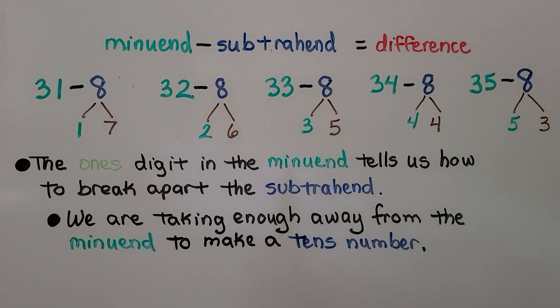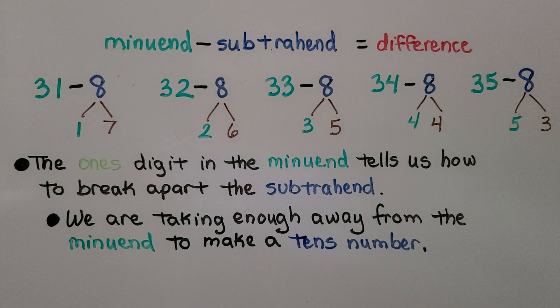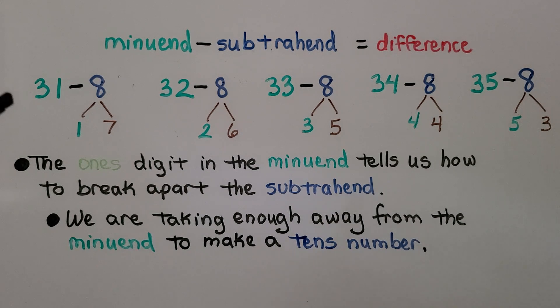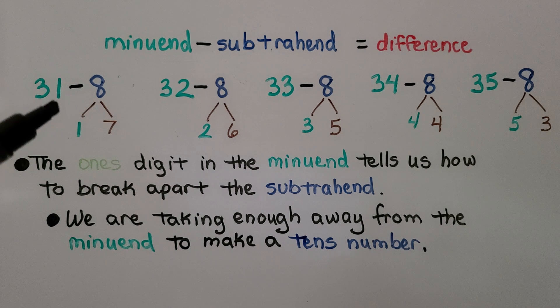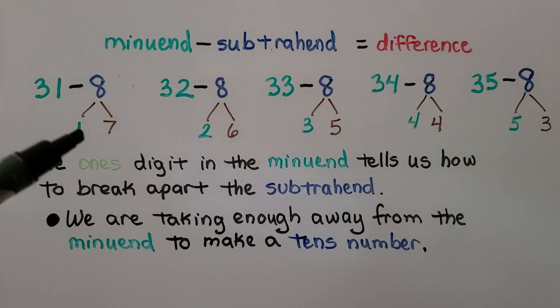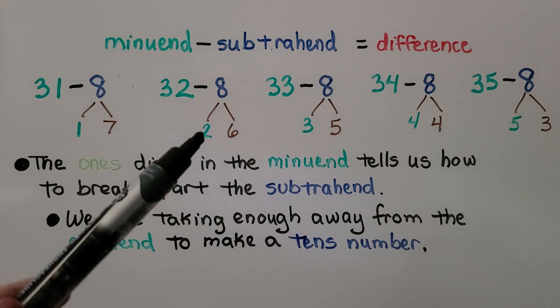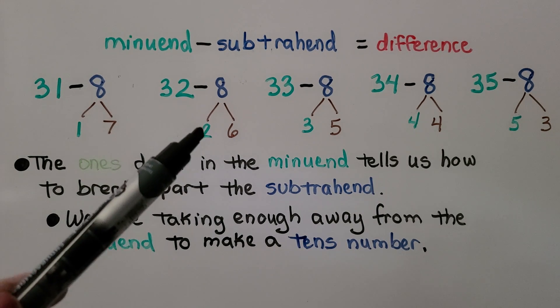The minuend minus the subtrahend equals the difference. If we have 31 minus 8, the ones digit in this minuend tells us how to break apart the subtrahend 8. It's got a 1, so one of our addends is going to be 1. We break the 8 into 1 and 7. If we have 32 minus 8, we have a 2 here, so one of the addends is going to be 2. We have 2 and 6.